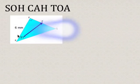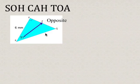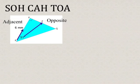So relative to angle R, we're looking for side length R, which is the side opposite of our 51 degrees. And for the 51 degree angle, we're also given that the adjacent side is 6 millimeters. And remember that the side opposite the right angle is the hypotenuse. So for angle R, this is our opposite side, and this is our adjacent side.